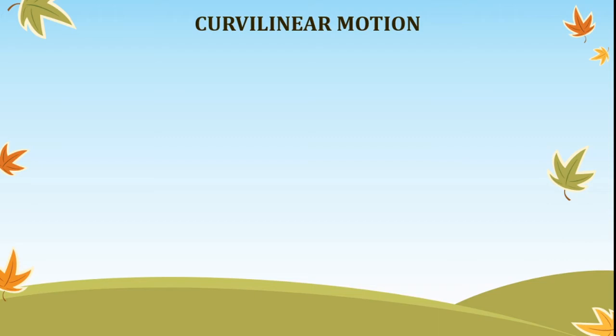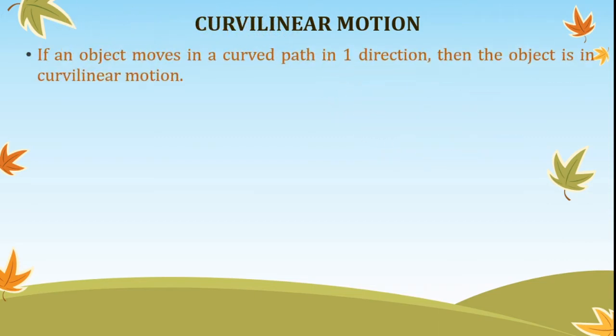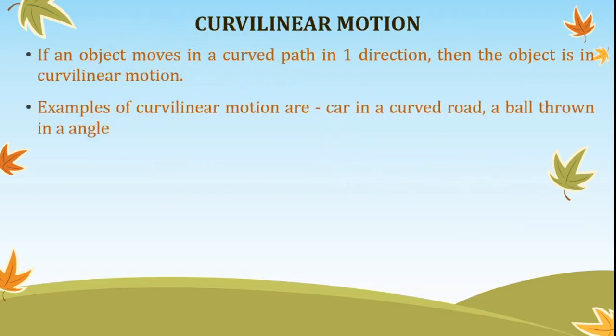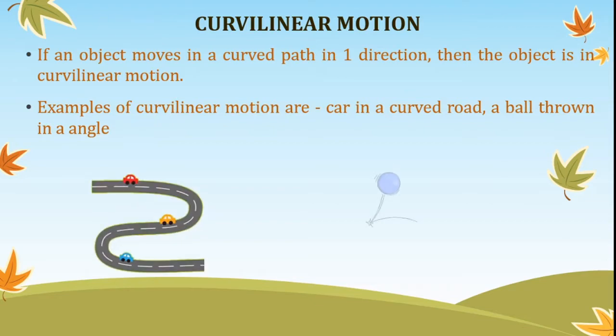Curvilinear motion. If an object moves in a curved path in one direction, then the object is in curvilinear motion. A car moving on a curved road or a ball thrown at an angle are some examples of curvilinear motion.